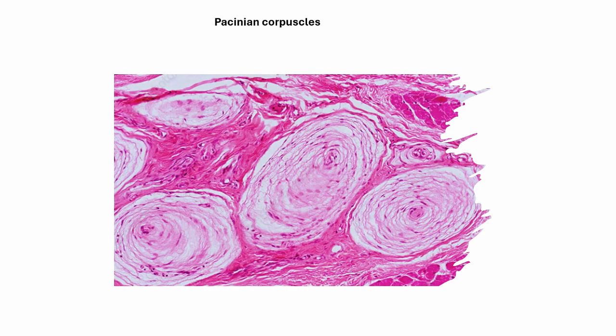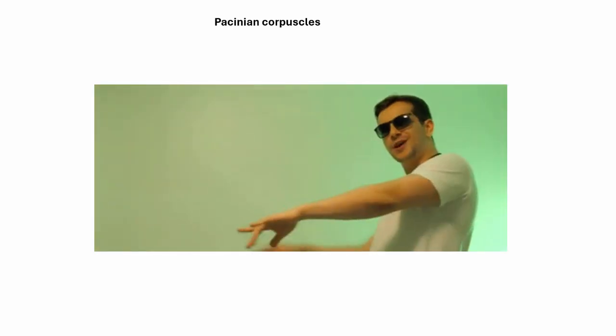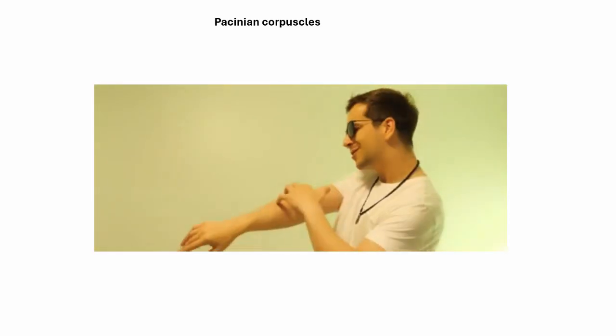Today's lesson is about Pacinian corpuscles. These are mechanoreceptors, basically receptor cells that detect vibrational pressure found all over our body and the skin.